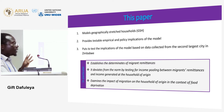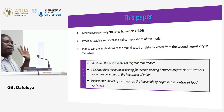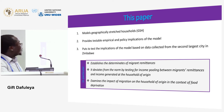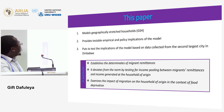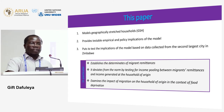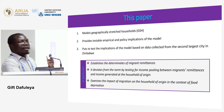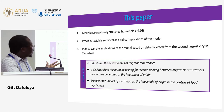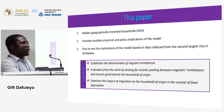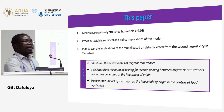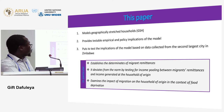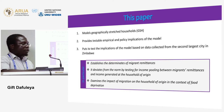In this paper, I create a geographically stretched household model, provide its testable empirical and policy implications, and use data from Zimbabwe, Bulawayo, to test those implications. In essence, I look at the determinants of remittances, income pooling from migrants' remittances and income generated at the household of origin, and the impact of migration on food deprivation at the household of origin.